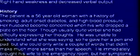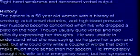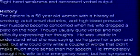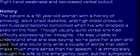Let's go on to case nine. Chief complaint: right-hand weakness and decreased verbal output. The patient is a 56-year-old woman with a history of smoking, adult-onset diabetes, and high blood pressure. Her husband became concerned when his wife dropped a plate on the floor. Though usually quite verbal, she had difficulty expressing her thoughts — he could not understand what she was saying, gave her a pen and pad, but she could only write a couple of words. He immediately brought her to the emergency room, but her symptoms resolved on the way.